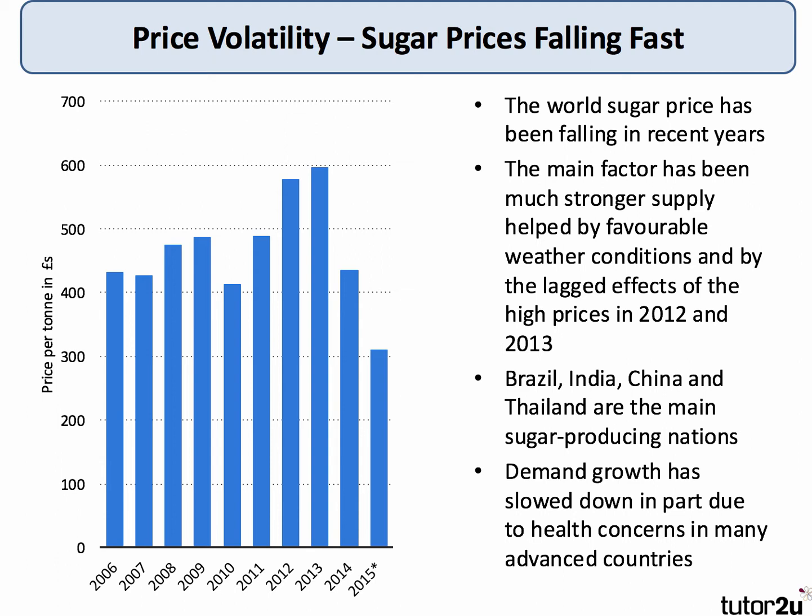So you've had an increase in supply, but equally demand growth in the market has been falling, in part due to increased health concerns. In the UK, going forward, there'll be a sugar tax on some sugary drinks, and the tax might be extended to other high sugar products. So a combination of fast-growing supply and slowing demand growth has caused price volatility in sugar.